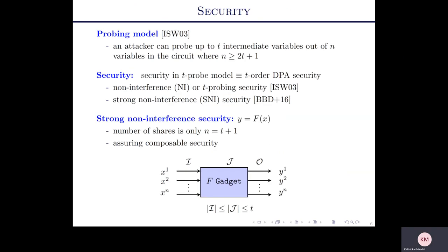The ISW probing model is an approach to measure the security of masking schemes. Ishai, Sahai, and Wagner first initiated the study of evaluating a circuit in the presence of an adversary who can probe up to T intermediate variables. They showed that to protect against such an adversary, the number of shares has to be at least 2T+1. The T-probe security is equivalent to Tth-order differential security. More recently, a strong non-interference (SNI) security definition was proposed, where the number of shares can be at least T+1, and it offers composability: if we have two TSNI-secure gadgets and compose them, the resultant gadget is again TSNI-secure.